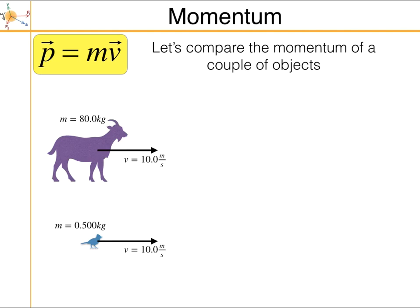Let's calculate a couple of simple ones for this goat. The momentum of the goat is just m times v — 80 kilograms times 10 meters per second — giving 800 kilogram meters per second. We don't have any special units for momentum; it's just kilogram meters per second. For the bird, momentum is also mass times speed. These two objects are going at the same speed, but one has much more mass, so they have vastly different momenta.